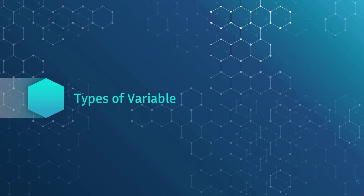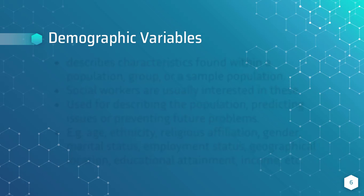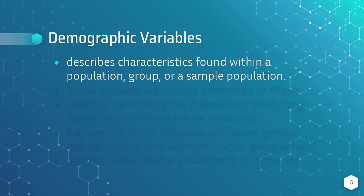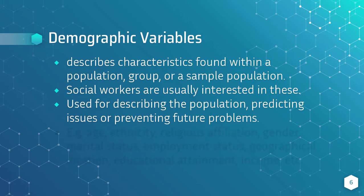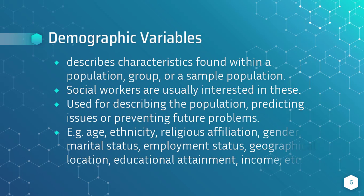Types of Variables. Demographic variables are used to describe characteristics found within a population, group, or a sample of the entire population. Social workers are usually interested in these variables since by getting data on specific parameters within a population, they will be able to describe the population, predict issues, or prevent future problems. Some examples are age,